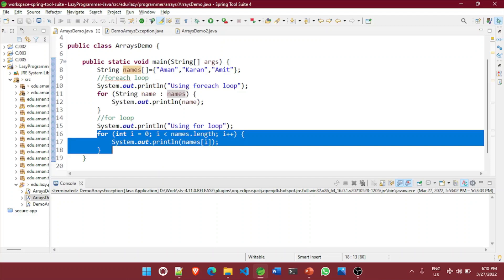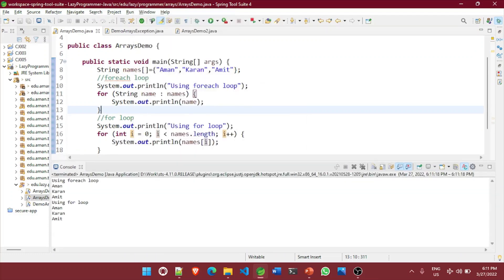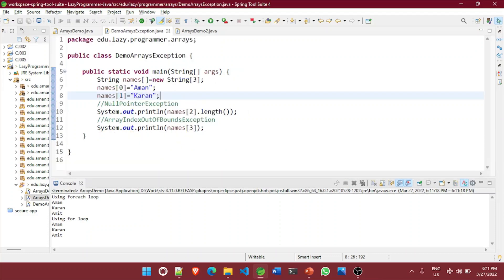So int i equals 0 and i less than names dot length. So it's a variable length. So we need to check it while executing the for loop itself so that the for loop should not go beyond the length of the array. Now let's try to run this program and see the output. It should be same. So here you can see using for each loop it has printed all three elements and using for loop also it has printed all three elements.